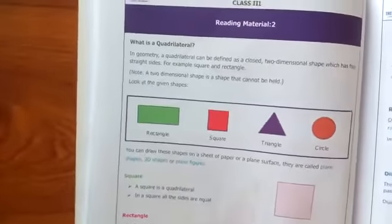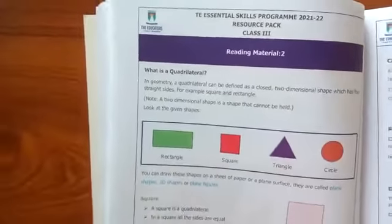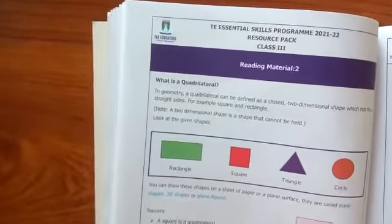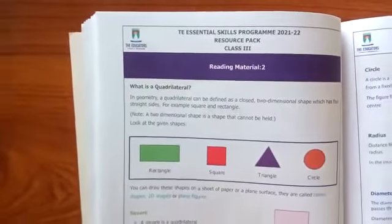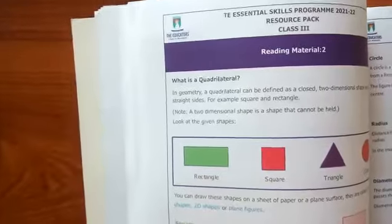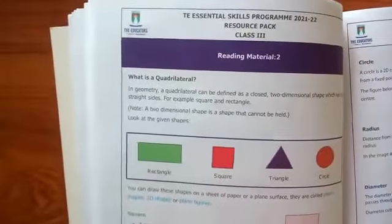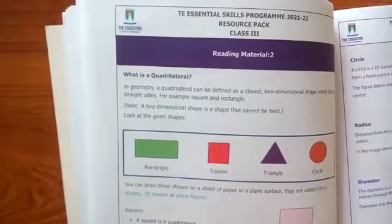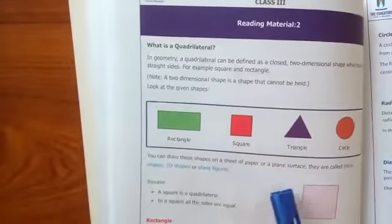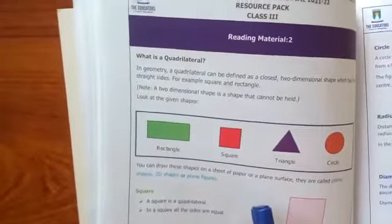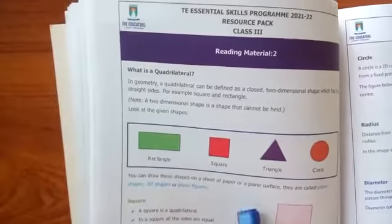Quadrilateral - any four-sided figure is called a quadrilateral. For example, square and rectangle. Any four-sided closed figure is called a quadrilateral, and shapes that you can draw on